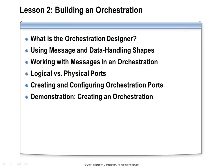Now that we've talked about the basics of orchestrations and have a sense of what they can do to help us automate business processes, let's start implementing one. In this lesson, we'll look at what the orchestration designer has to offer, take a first look at some of the shapes we can use, see how to accept a message into an orchestration, use it to create a new message, and send that new message back out. We'll discuss these logical ports in the orchestration designer and how they relate to physical ports in the administration console. I'll close the lesson with a demonstration showing how to create a very simple orchestration.